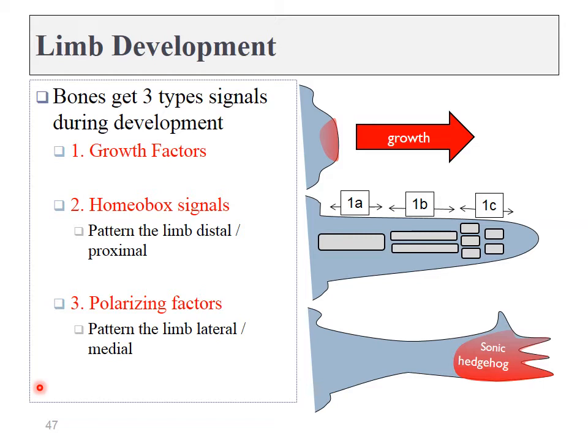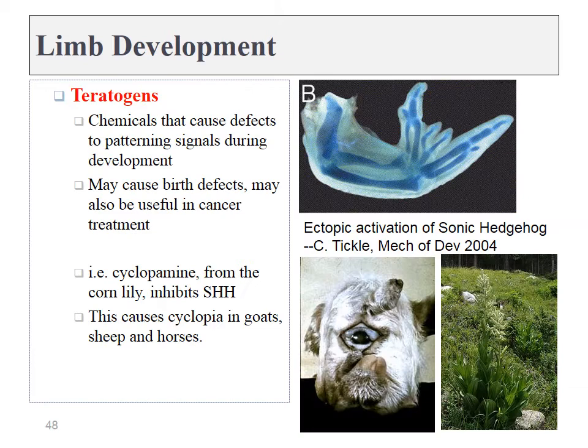The growth of bone tissue requires a number of different signaling molecules. First, we need growth factors that tell the bones where to grow. Next are a class of signals called homeobox signals that tell which bones to grow where — for instance, in our limbs we have the pattern of one bone, then two bones, then four bones, similar to the way a tree grows. Lastly, we might have polarizing factors that tell the bones whether they are more medial or more proximal. In the limbs, this molecule is called sonic hedgehog, and we'll be talking about it throughout the year.